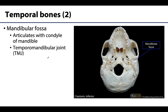In the inferior view of the temporal bone, notice this smooth divot called the mandibular fossa. A smooth surface like this often indicates where a joint forms. In this case, the articular cartilage sat here during life — that's why it's so smooth. This is where the condyle of the mandible articulates with the temporal bone, forming the temporomandibular joint — the T in TMJ.